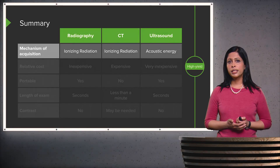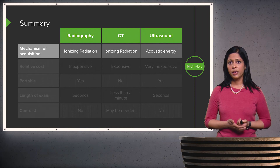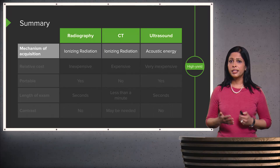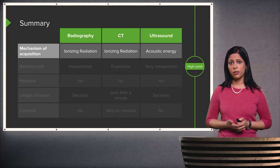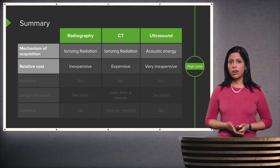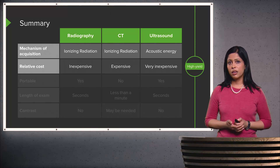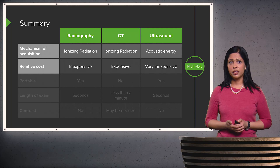To review — we've now discussed radiography, CT, and ultrasound. Radiography and CT both use ionizing radiation, while ultrasound uses acoustic energy and doesn't have the risks associated with ionizing radiation. Radiography is inexpensive, and ultrasound is actually even less expensive than radiography. CT is the most expensive of the three.